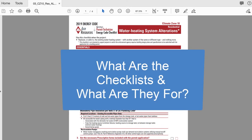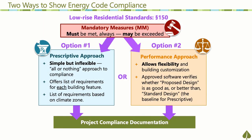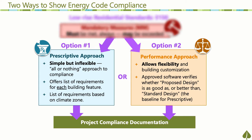Now that you know where to find the checklists, let's talk more about their purpose and the types of projects they can assist you with. If a home project triggers the energy code, its proposed design and construction must demonstrate compliance with energy efficiency standards. The energy code allows for two options to do this: the prescriptive approach and the performance approach.